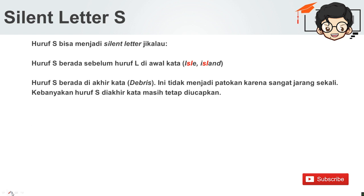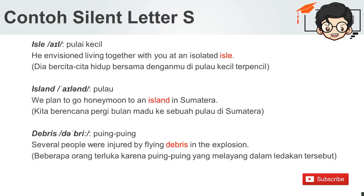Untuk silent letter S, kita tidak perlu membaca huruf S apabila huruf S berada sebelum huruf L di awal kata. Contohnya, 'island'. Dan juga huruf S berada di akhir kata seperti 'debris' — ini tidak menjadi patokan karena sangat jarang sekali. Kebanyakan huruf S di akhir kata masih tetap diucapkan. Contoh pertama: 'isle' — pulau kecil. He envisioned living together with you at an isolated isle. Dia bercita-cita hidup bersama denganmu di pulau kecil terpencil. Yang kedua, 'island': We plan to go honeymoon to an island in Sumatra. Kita berencana pergi bulan madu ke sebuah pulau di Sumatra.